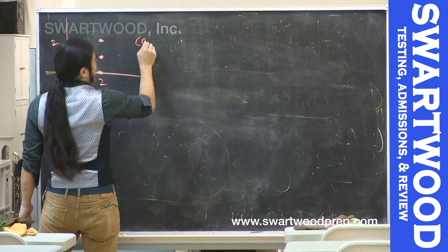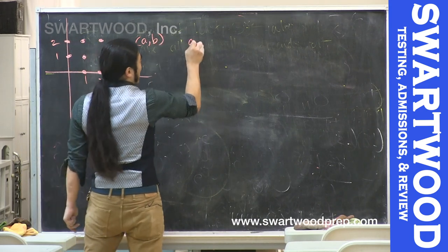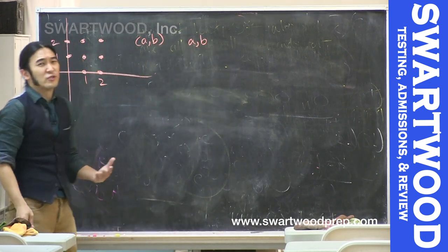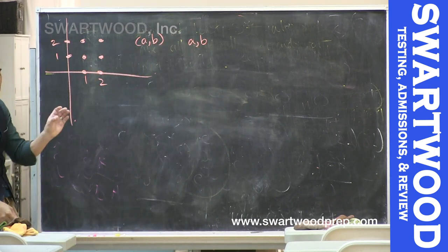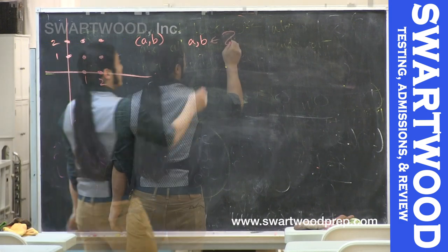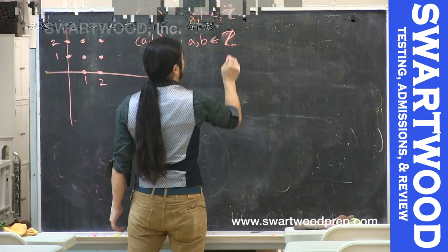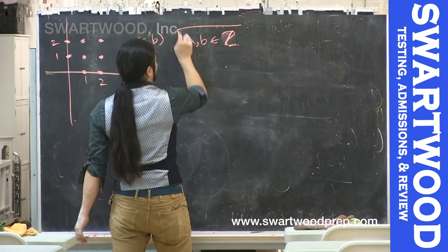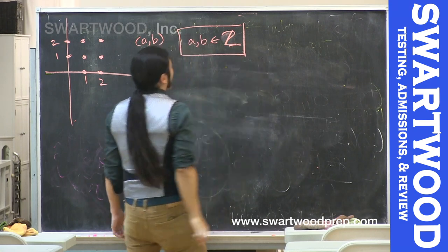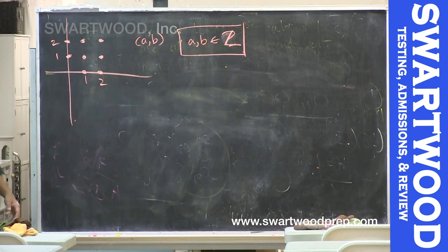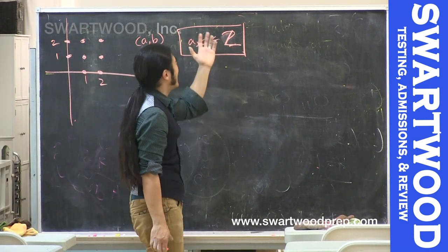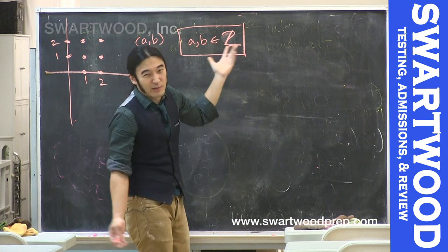You're looking at the set of guys (a, b) where a and b are integers — integers being like 0, 1, 2, 3, 4, 5, 6, but also negative 1, negative 2, negative 3, on down. This symbol for integers comes from 'Zahl', which is German for 'number'.